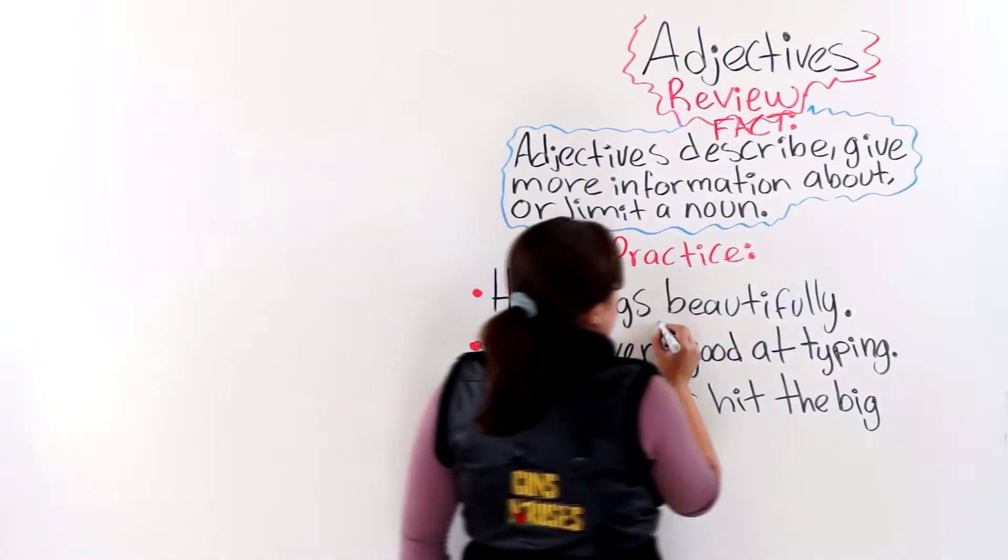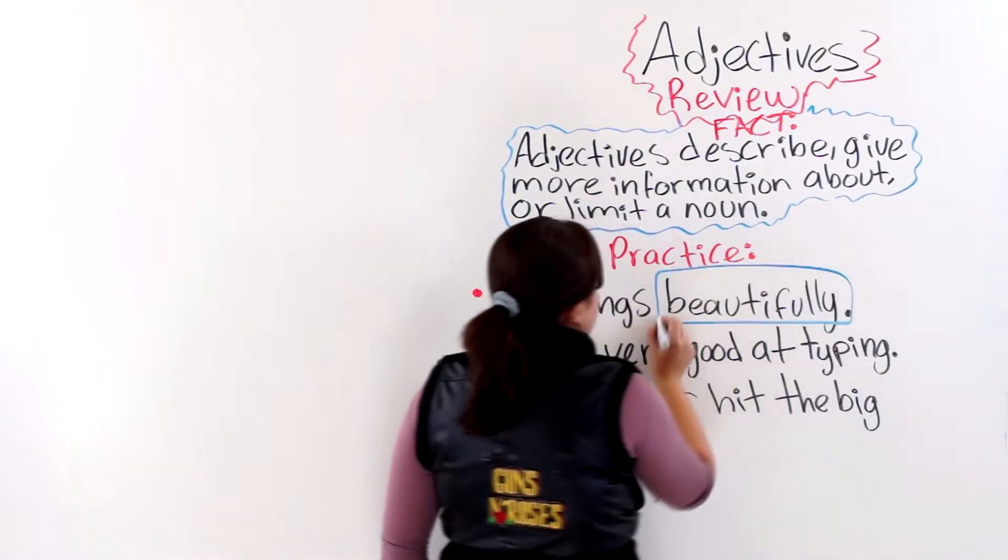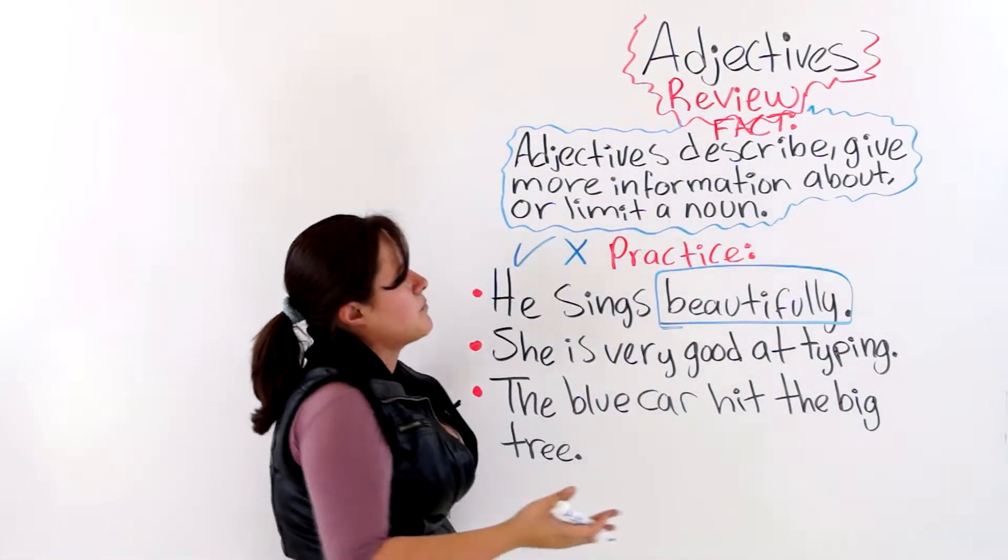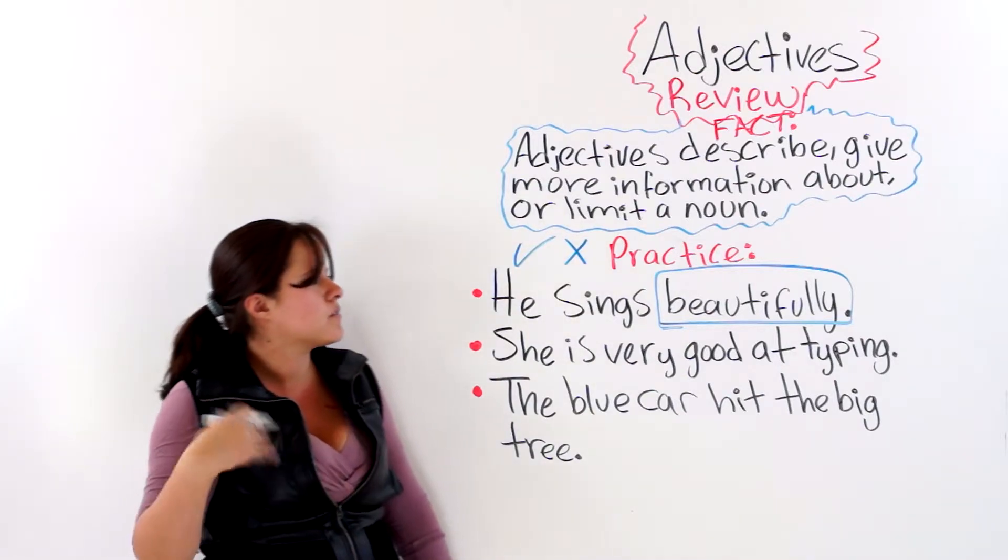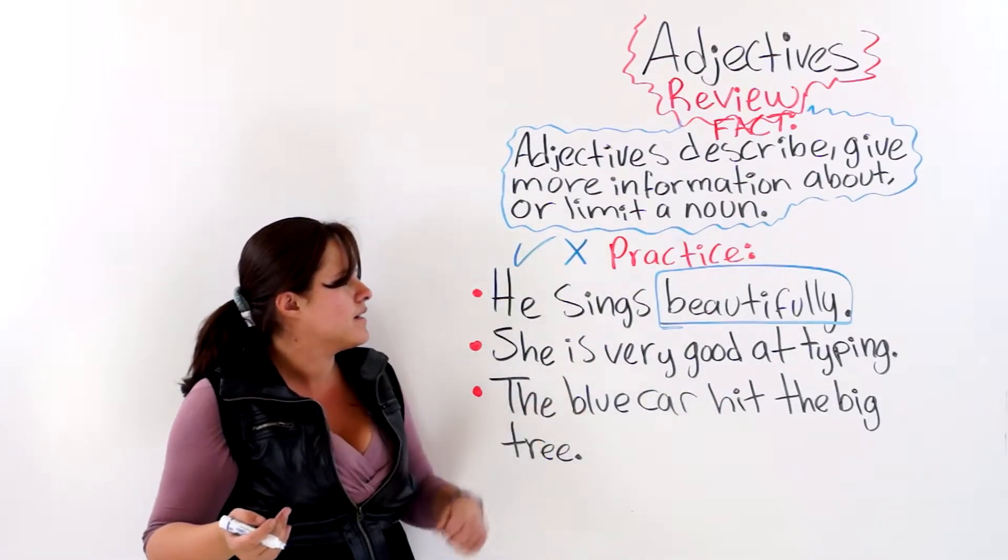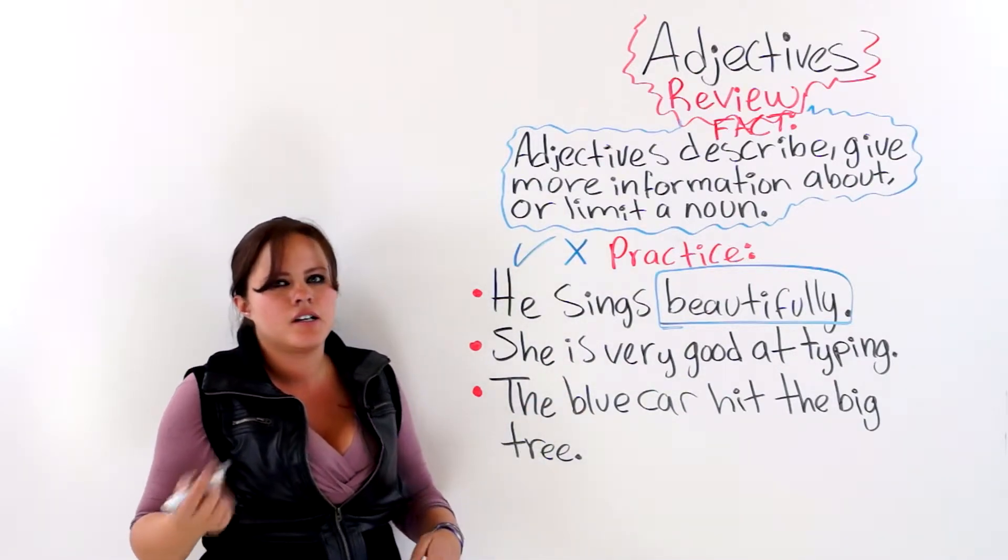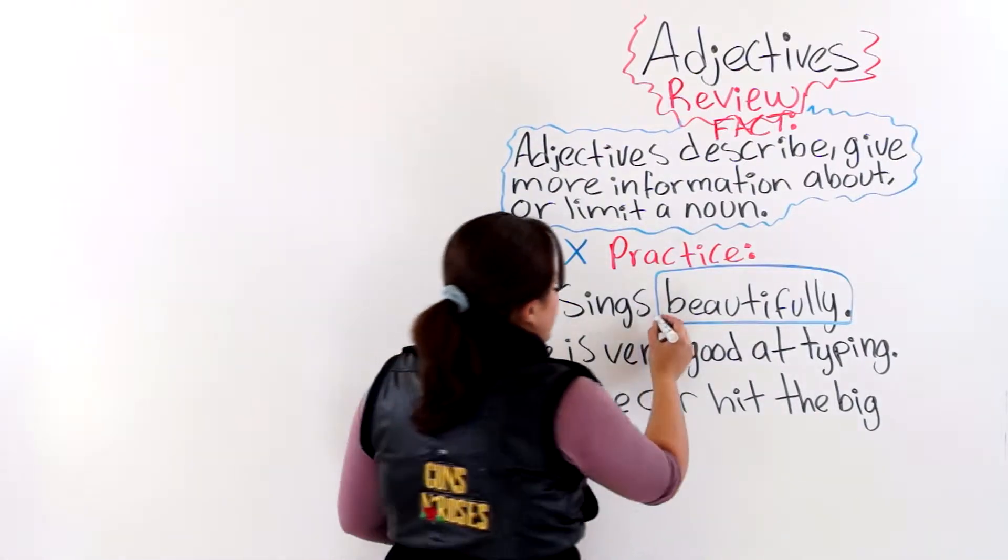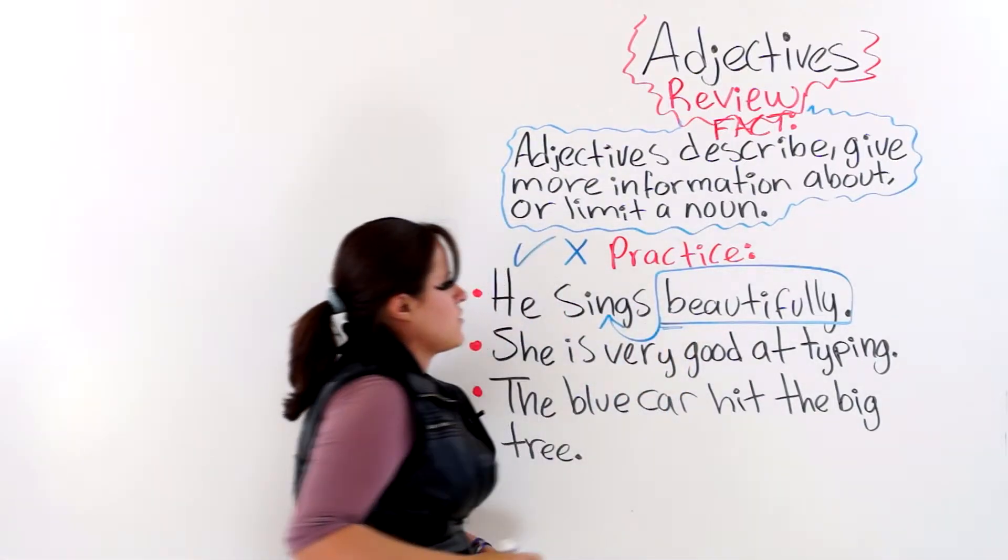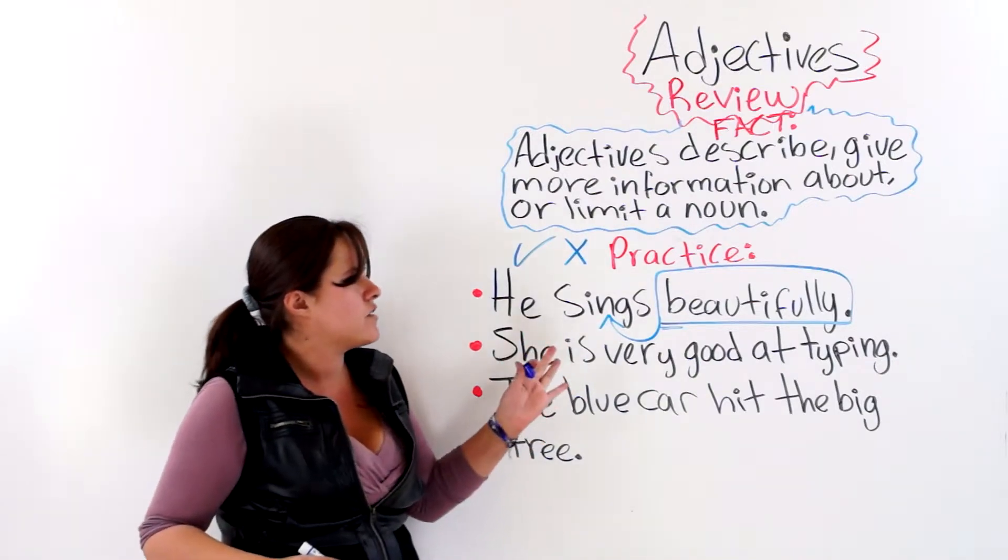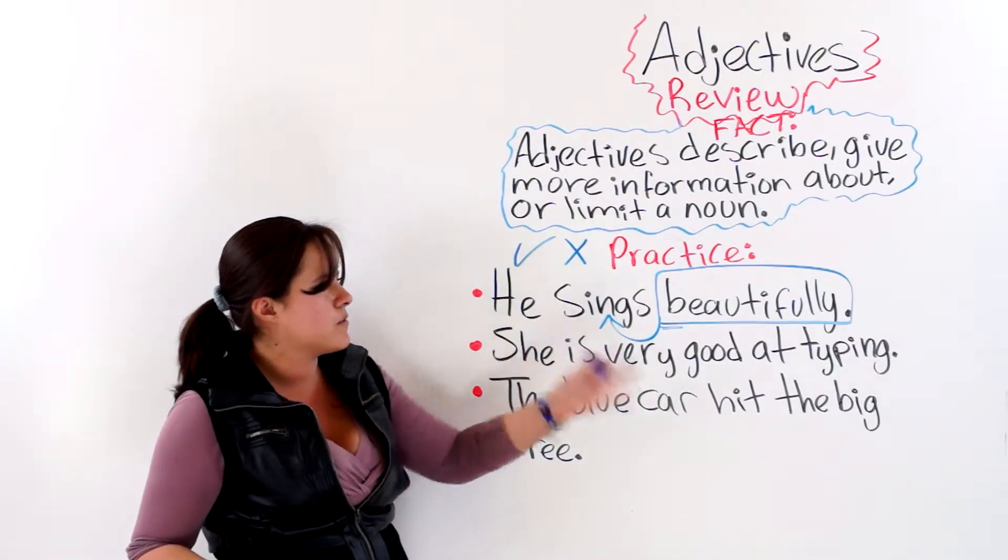We have this here. It is describing something, but it is not describing a noun or pronoun. So what is that? Is that an adjective? No, it isn't. This is describing the action, the verb. He sings how? He sings beautifully. So this is not an adjective.